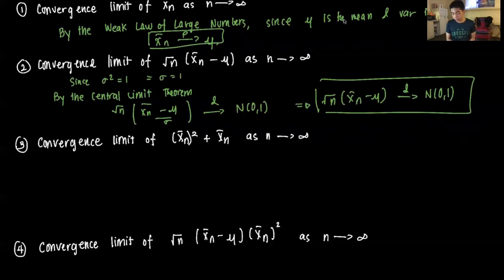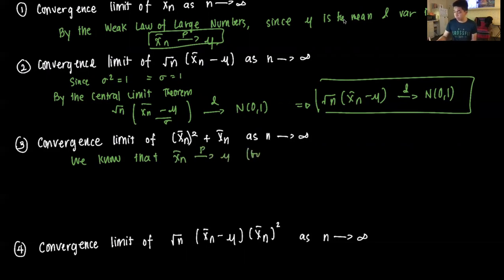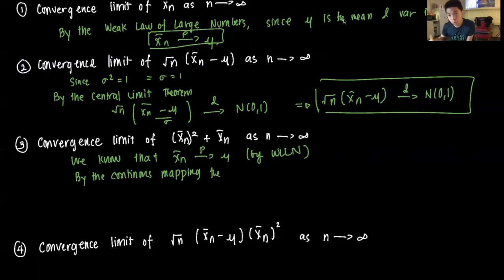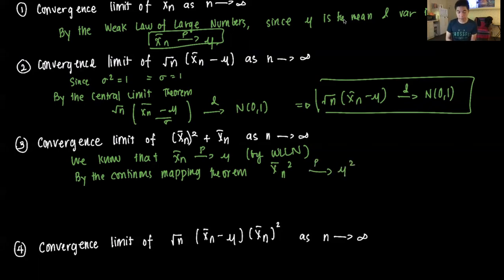Next, we find the convergence limit of x̄ₙ² + x̄ₙ. By part one, we know x̄ₙ converges in probability to μ by the weak law of large numbers. By the continuous mapping theorem, if we apply a squaring function, then x̄ₙ² converges in probability to μ².